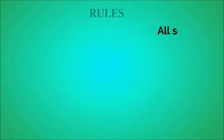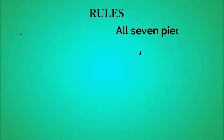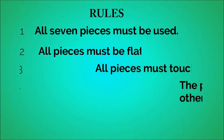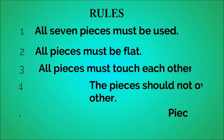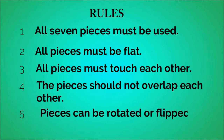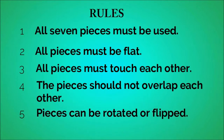There are certain rules to follow for making shapes using the pieces. The first rule is we must use all the seven pieces. The second rule is all the pieces should be kept flat on the surface. The third rule is all pieces must touch each other. The fourth rule is the pieces should be arranged in such a manner that they do not overlap each other.